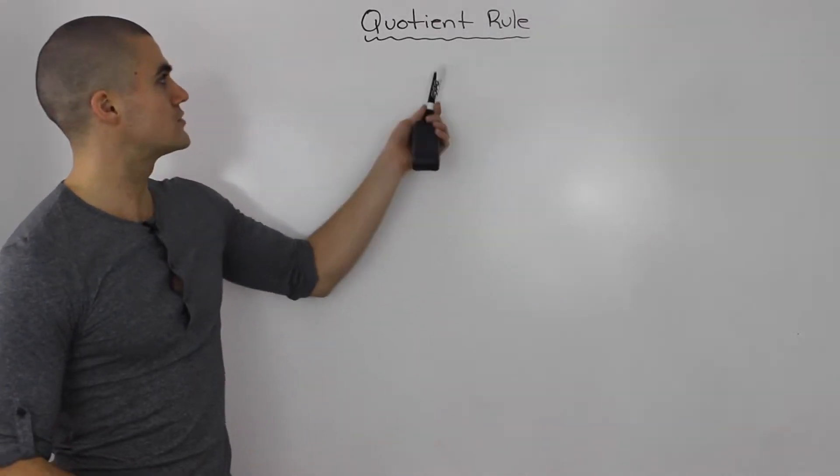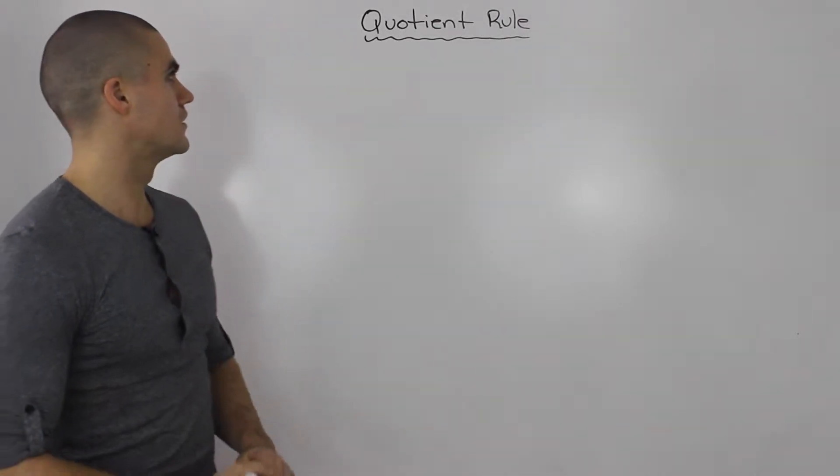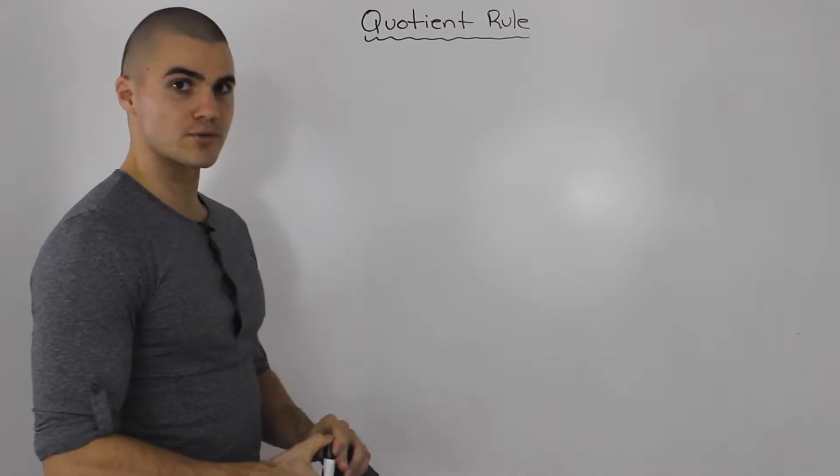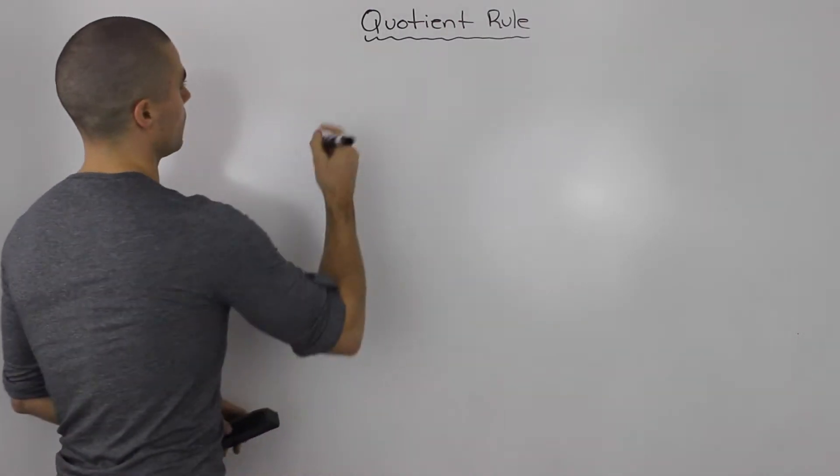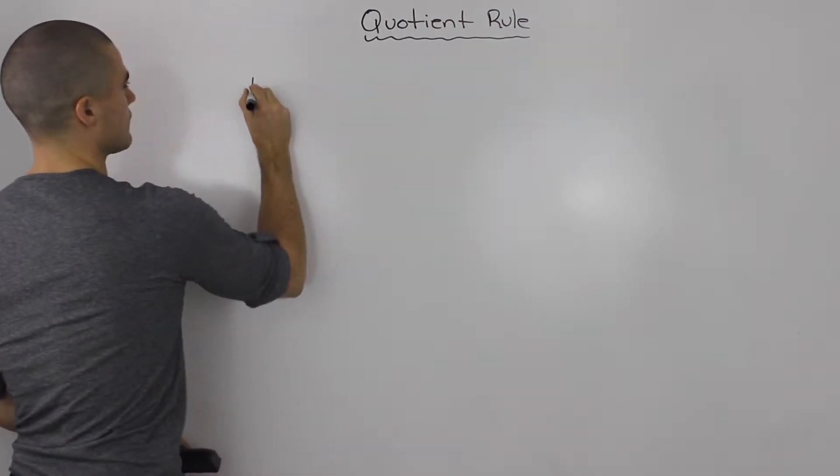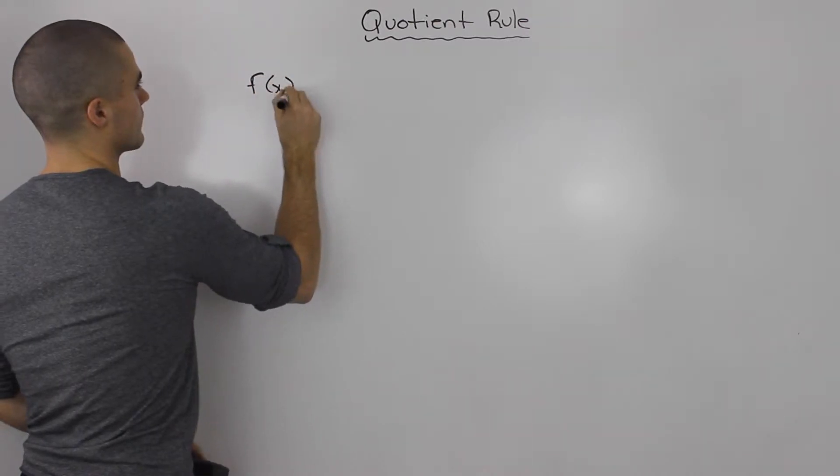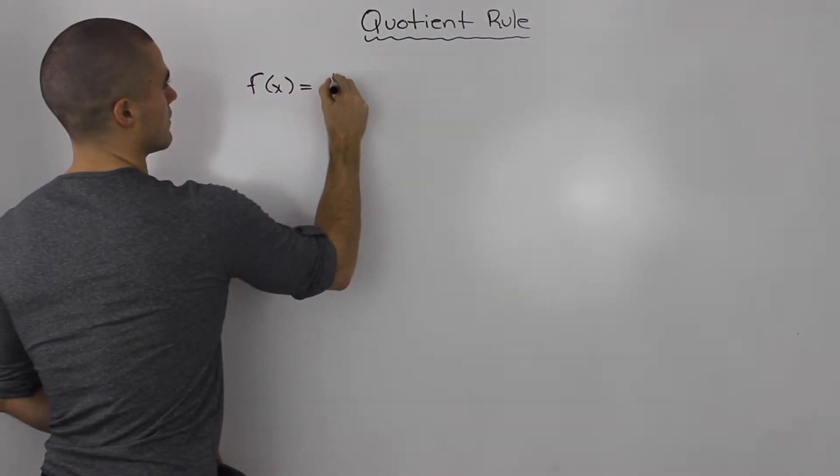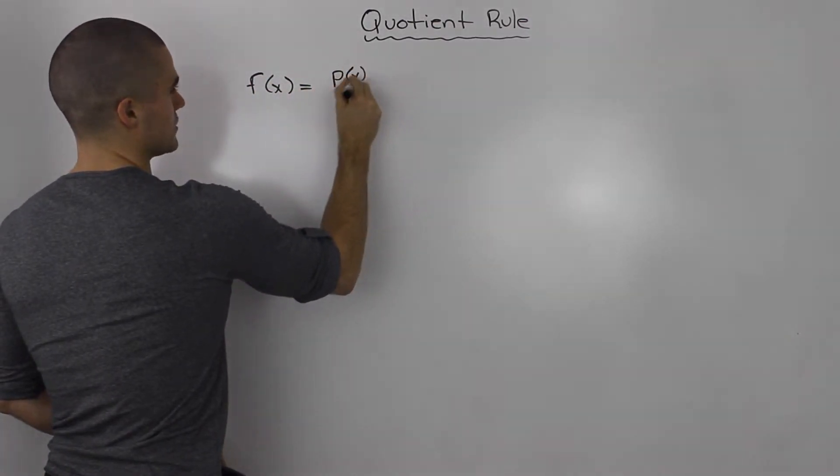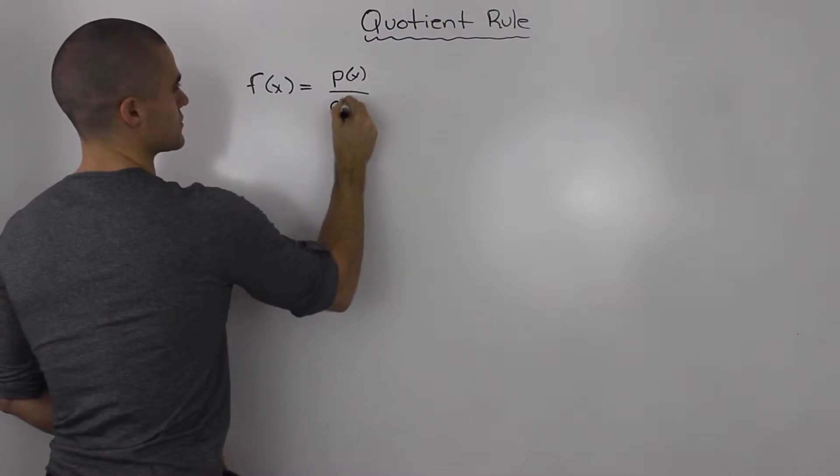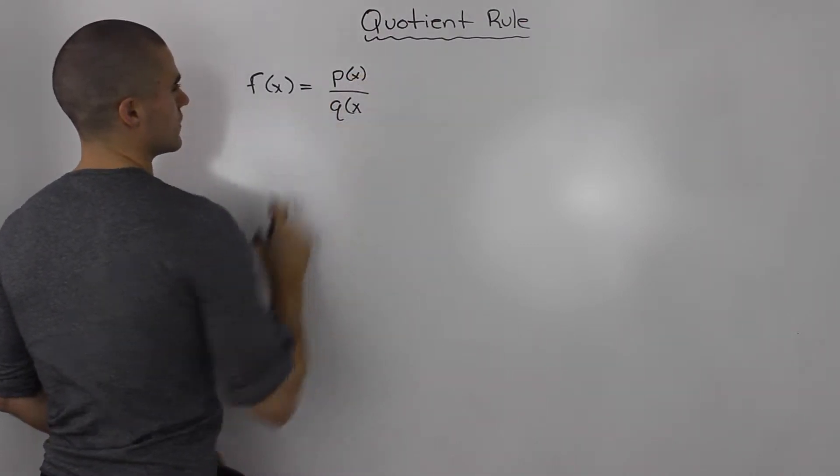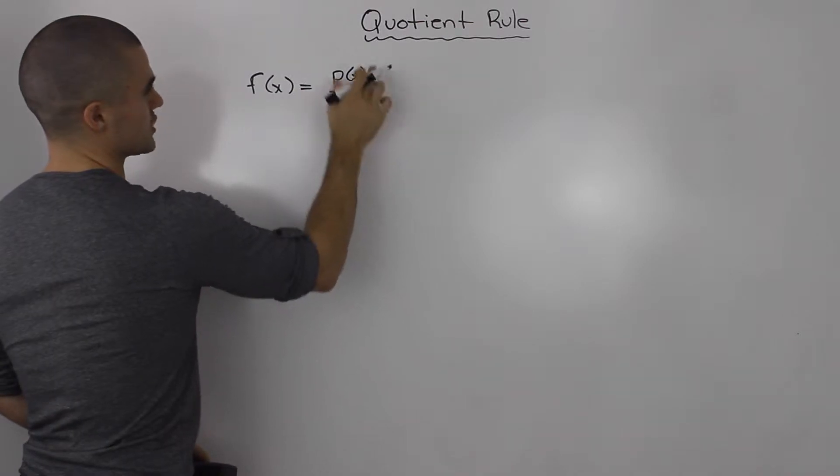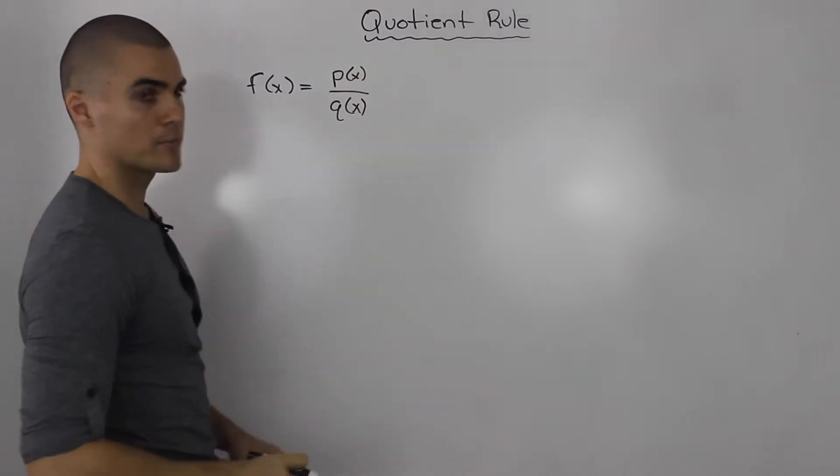Moving on to the quotient rule. The quotient rule for derivatives is used when you have a rational function in terms of two other functions - a function in the numerator and a function in the denominator.